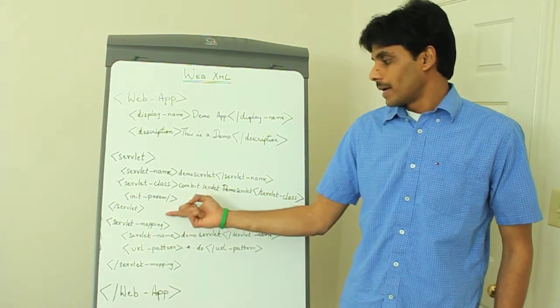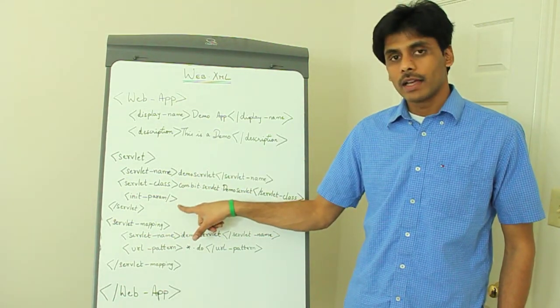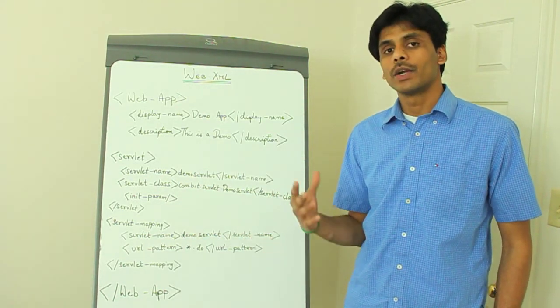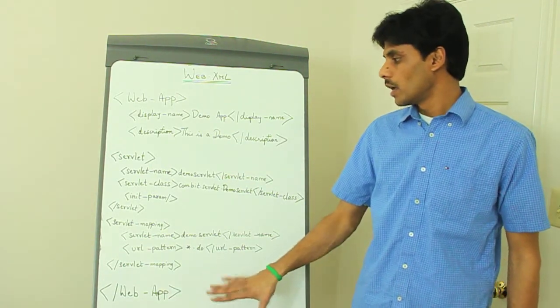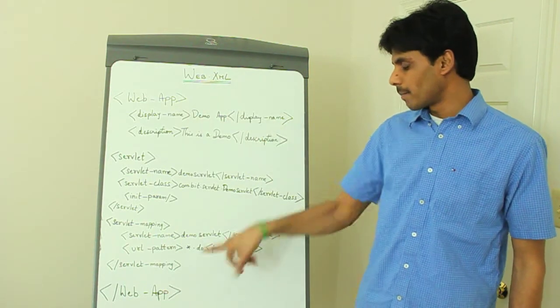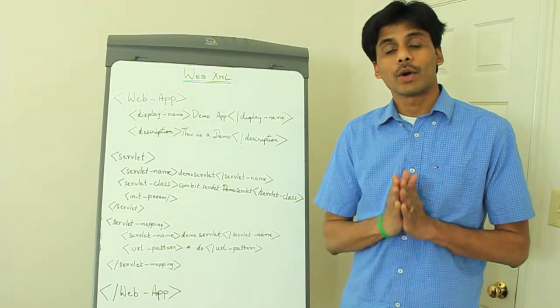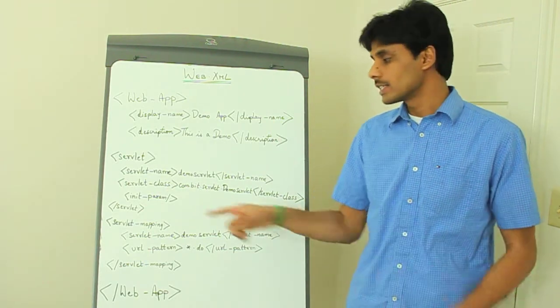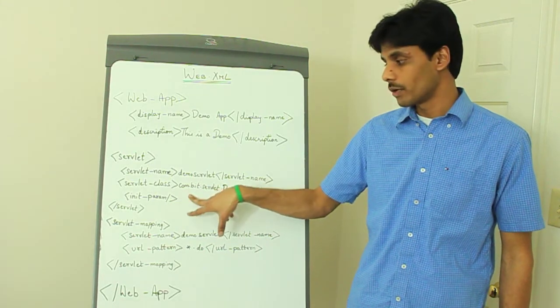But whatever parameters you declare here within the servlet declaration using the init-parameter tag will be given to your servlet's init method at runtime. The servlet container reads the web.xml, loads all the servlets into the memory map, does the URL mapping and then it creates a servlet config object, fills in that servlet config object, the initialization parameters, whatever you declare here.